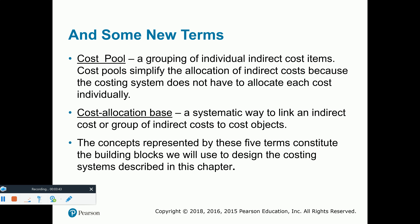A cost pool is basically where we gather all of our costs together. This is really important for indirect costs — if we gather all our costs together and use one large allocation method to allocate the indirect costs to the individual inventory items. In order to allocate, we need to come up with a cost allocation base, which is basically our allocation methodology to allocate the indirect costs to the inventory items. We will be studying that as we go along in this chapter.